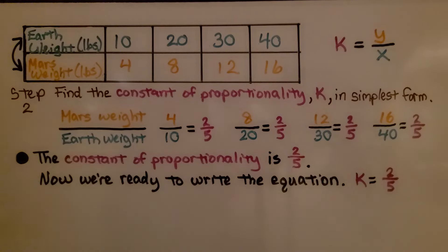That means our constant of proportionality is 2/5. Now we're ready to write the equation. And k, our constant of proportionality, is equal to 2/5.